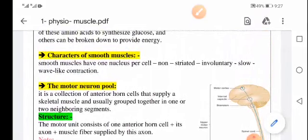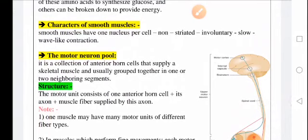Motor Neuron Pool is the collection of the anterior horn cells that supply a specific skeletal muscle, and they are usually grouped together in one or two neighboring segments. To restructure, motor unit, which I have mentioned before, is one anterior horn cell, its axon, and the muscle fiber supplied by this axon. So remember, motor unit is not the same as a motor neuron pool.